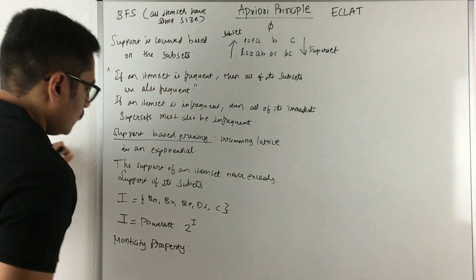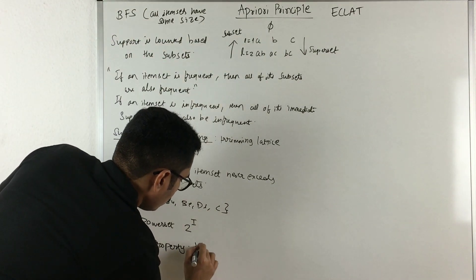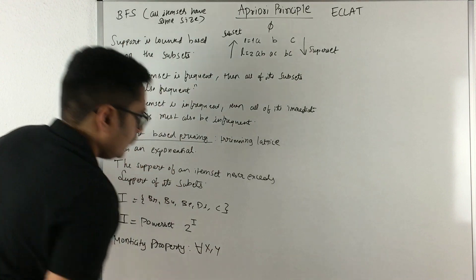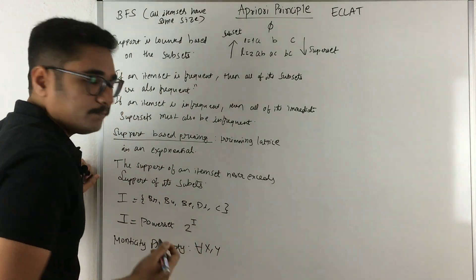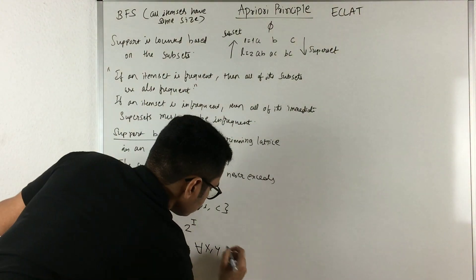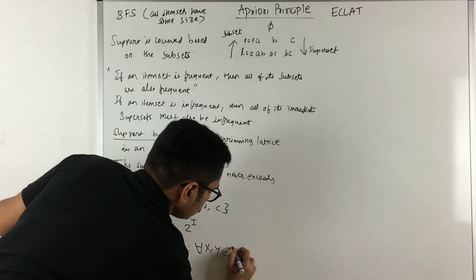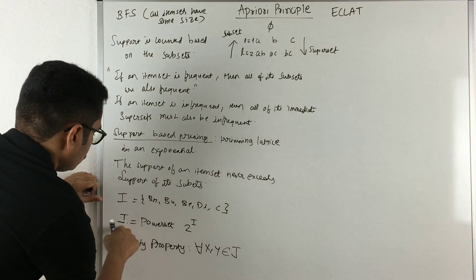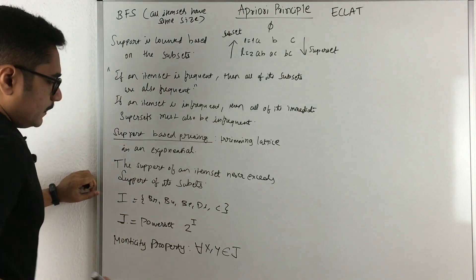What this is is that for all X and Y, where X and Y are basically the item sets which belong to this J, that is this power set, this is J.